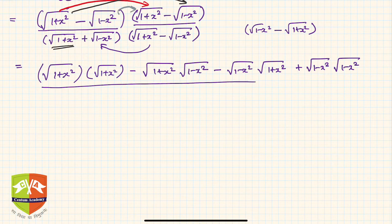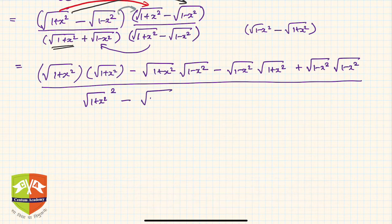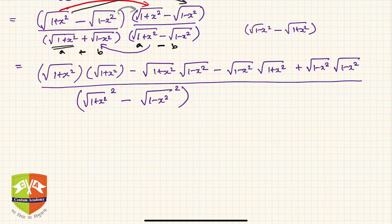For the denominator, you can see it is in the (a+b)(a-b) form, so you can write it as a² - b². Here a = √(1+x²) and b = √(1-x²), so the denominator becomes (√(1+x²))² - (√(1-x²))², which equals (1+x²) - (1-x²).